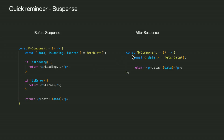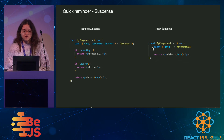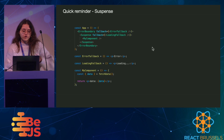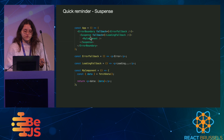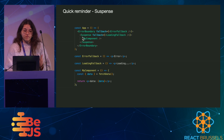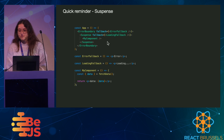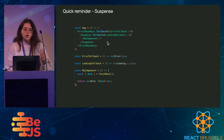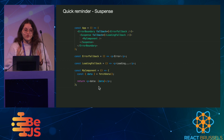we don't have to worry about this error and loader edge cases anymore — they're handled above. Above our component, we define this suspense boundary with a loader and an error boundary with an error. And in any component located below, we don't have to worry about this anymore. This is why we love suspense so much: no more error, no more loader spread throughout our apps. We can directly focus on the part where we bring the most value.